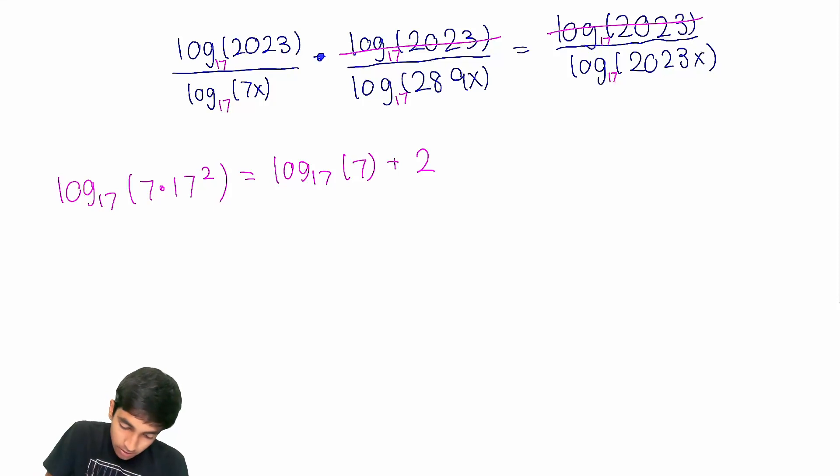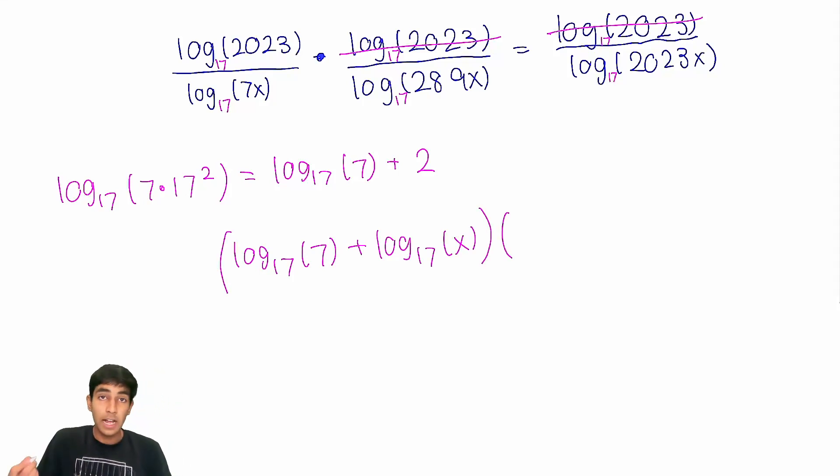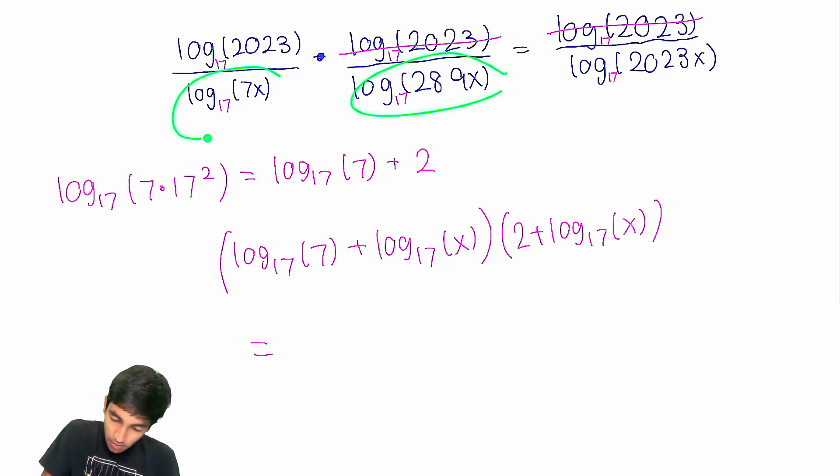So log₁₇(7x) is just log₁₇(7) plus log₁₇(x). And then this times log₁₇(289x), which is just 2 plus log₁₇(x). And all of this, their product, is equal to, well, we can move, right? We have this and this on top here.